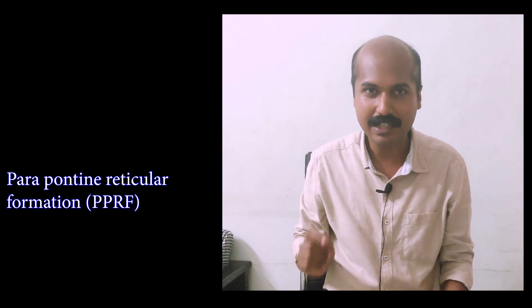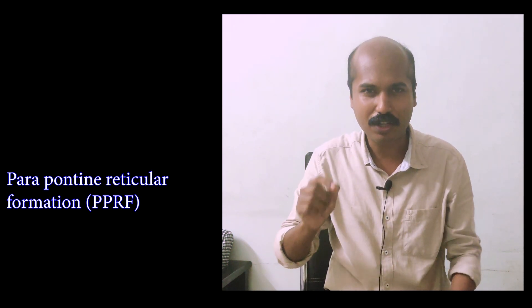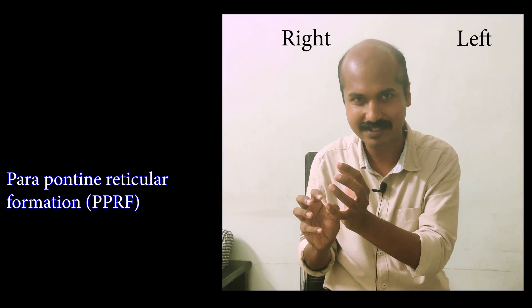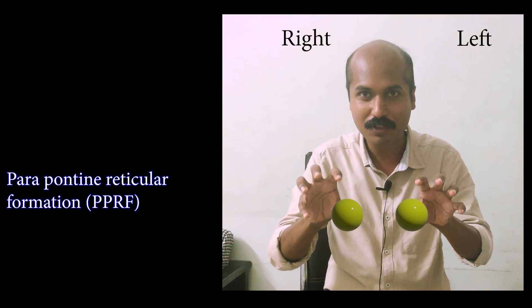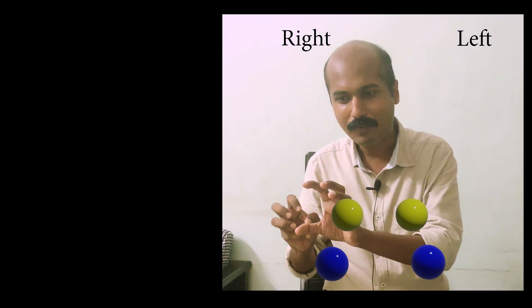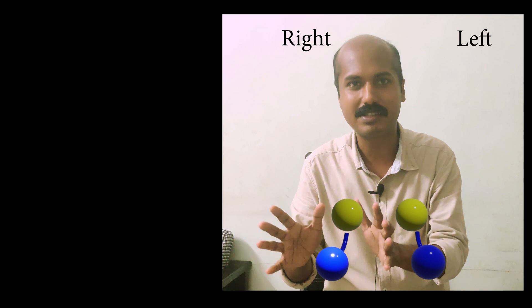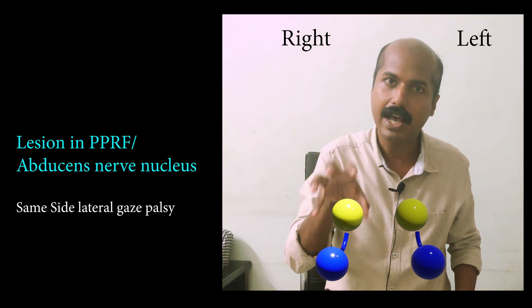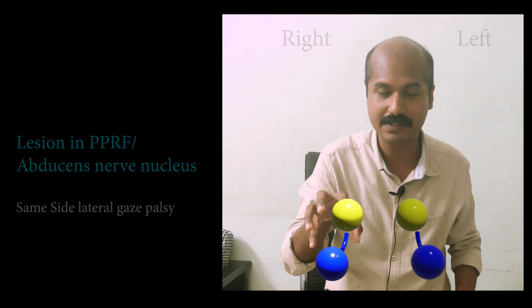For completion, two more structures need to be added to the lateral gaze circuit. The first is the PPRF — parapontine reticular formation — which is located close to the abducens nerve nucleus in the lower pons. When the PPRF is stimulated, it stimulates the abducens nerve nucleus. Therefore, a lesion in the PPRF causes the same effect as a lesion in the abducens nerve nucleus.